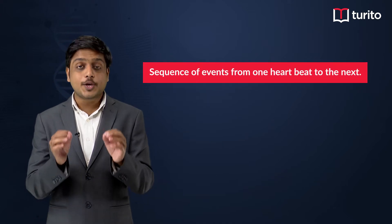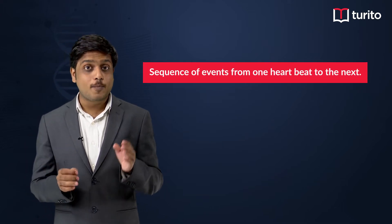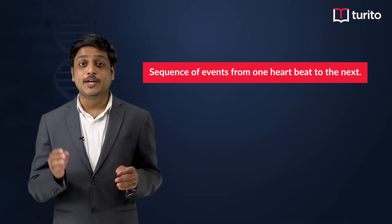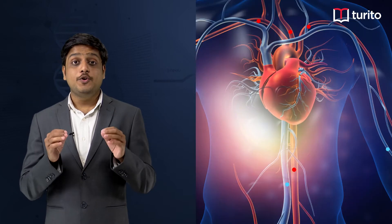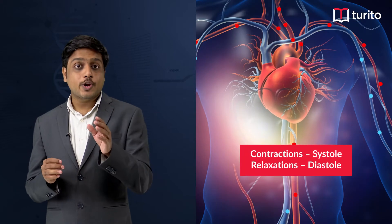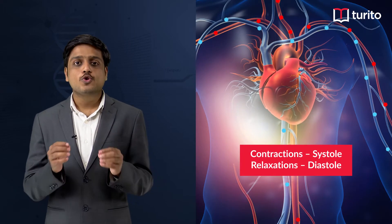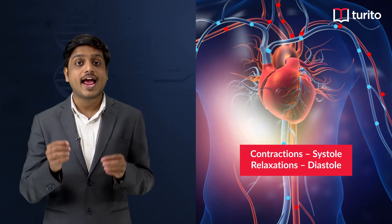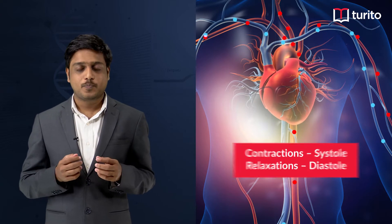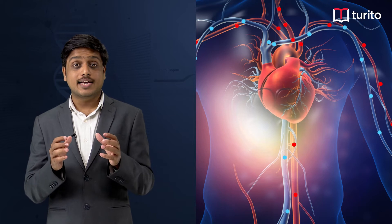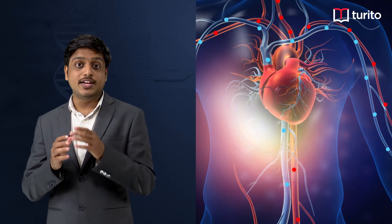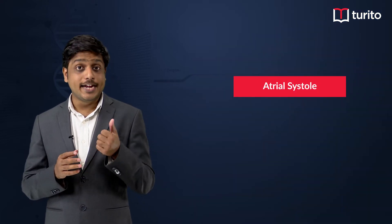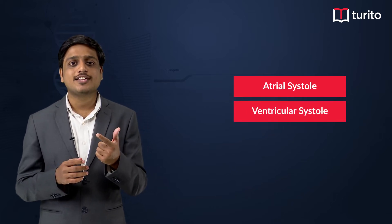So let us learn about the cardiac cycle. The cardiac cycle refers to the sequence of events that occur from one heartbeat to the next. During the cardiac cycle, the heart contracts and relaxes so as to pump the blood to different parts of the body and back to the heart. The cardiac cycle includes three main events: the atrial systole, the ventricular systole, and the atrioventricular diastole.